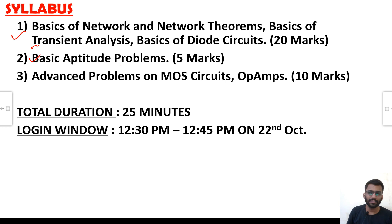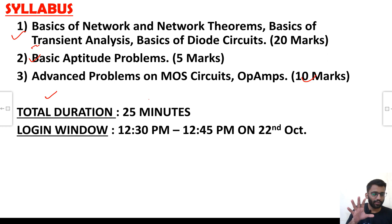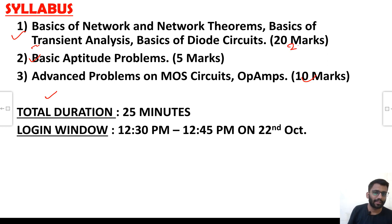There will be 5 questions from basic aptitude — very basic, 5 problems each carrying one mark. And from the remaining part there will be 5 more problems; the questions will not be that much advanced. So you still have 25 marks and you can score very well.